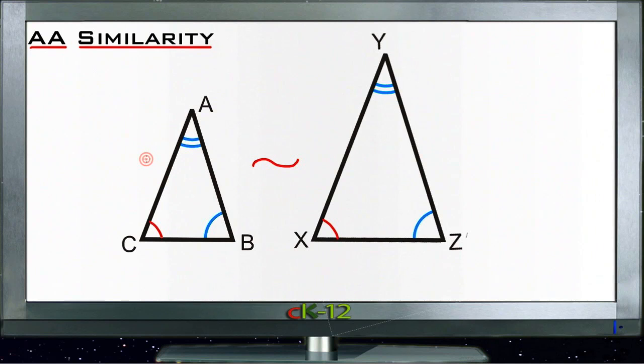If, for instance, we know that AC is 5 and XY is 10, then we know that everything about this triangle here is twice as big as it is on this triangle here. All right, let's take a look at how this works with example questions.